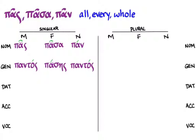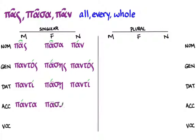So if we continue, in the dative, we get panti, passe, panti. In the accusative, we get panta, pasan, pan. And in the vocative, we get pas, pasa, pan. And you can see that that vocative is the same as the nominative.